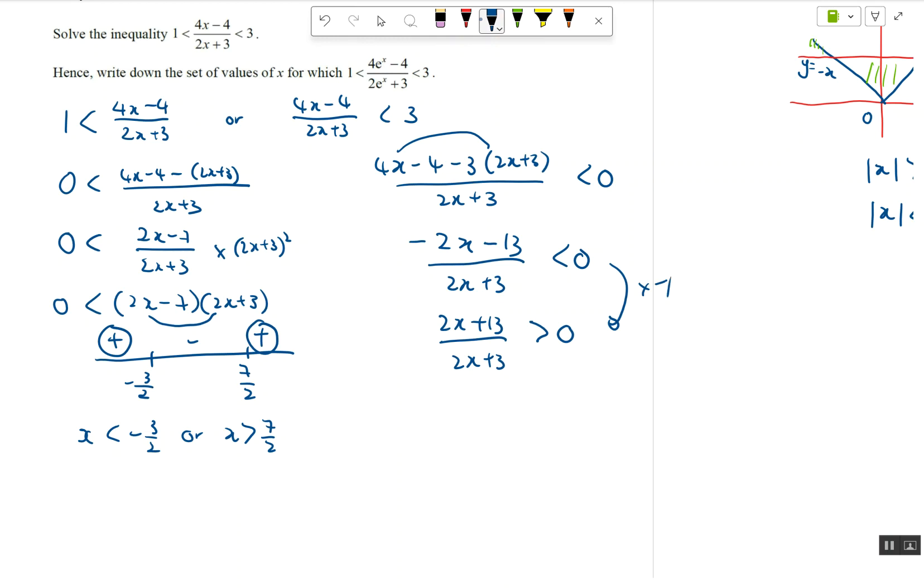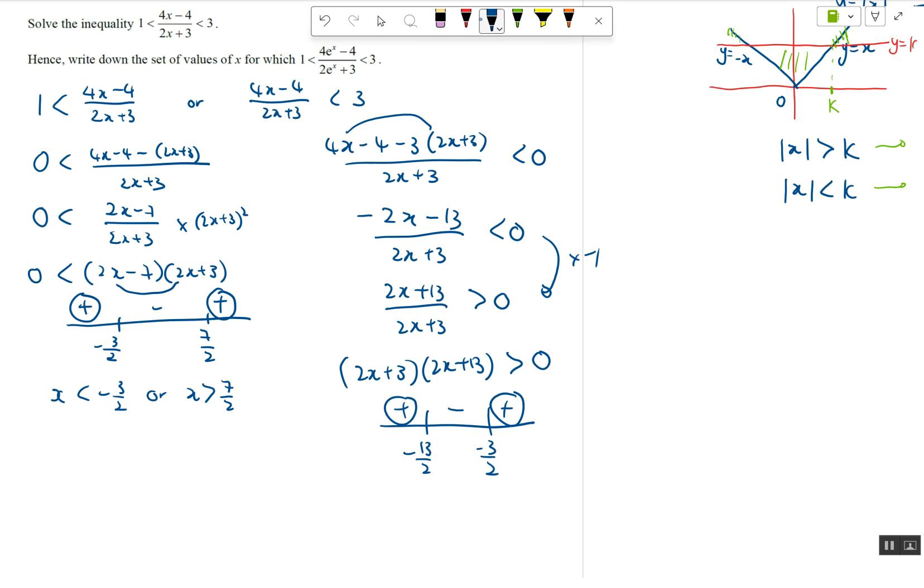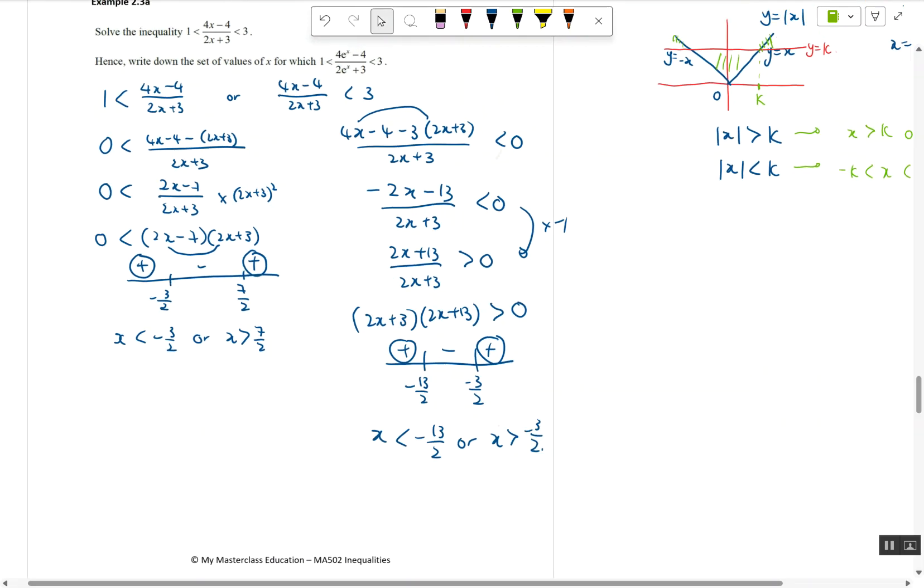And then you multiply by the (2x + 3) squared, so I have (2x + 3)(2x + 13) greater than 0. Again, plus minus plus, I'm taking this part, this part: negative 13/2, negative 3/2. So x must be less than negative 13/2, or x must be greater than negative 3/2.